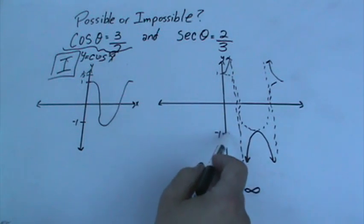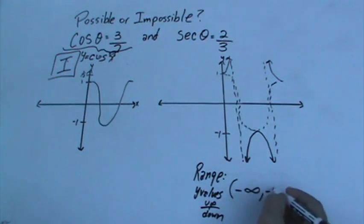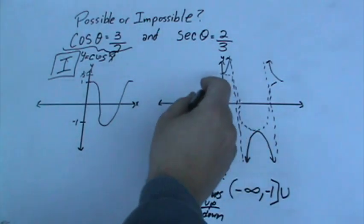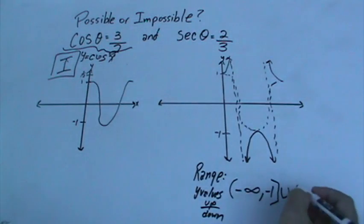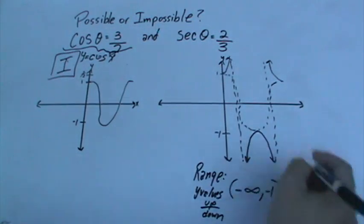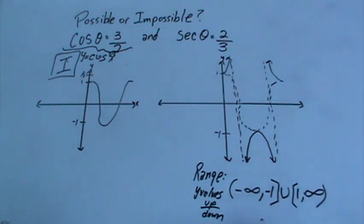Now does it touch negative 1? It does. So it does go all the way to 1 and it does touch it. Then it stops for a while and it doesn't go again until 1. And remember it does touch 1. Then it goes up all the way until infinity. So this is your range.